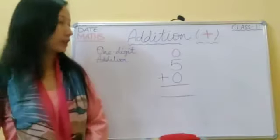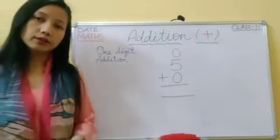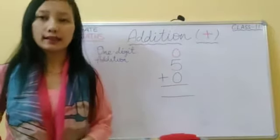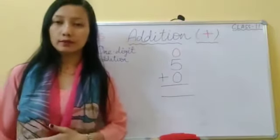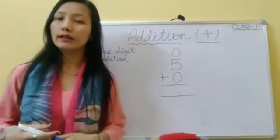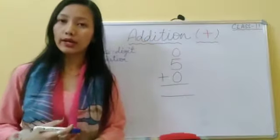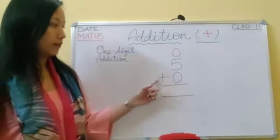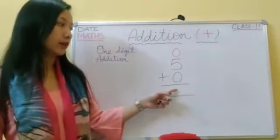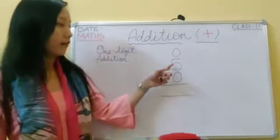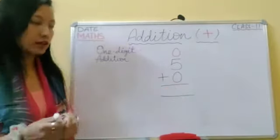Next, five plus zero. As you all know, zero means nothing. When you add zero to any number, the answer will be the number itself — the sum will be the number itself. That means five plus zero is equal to five, the number itself. So write five.